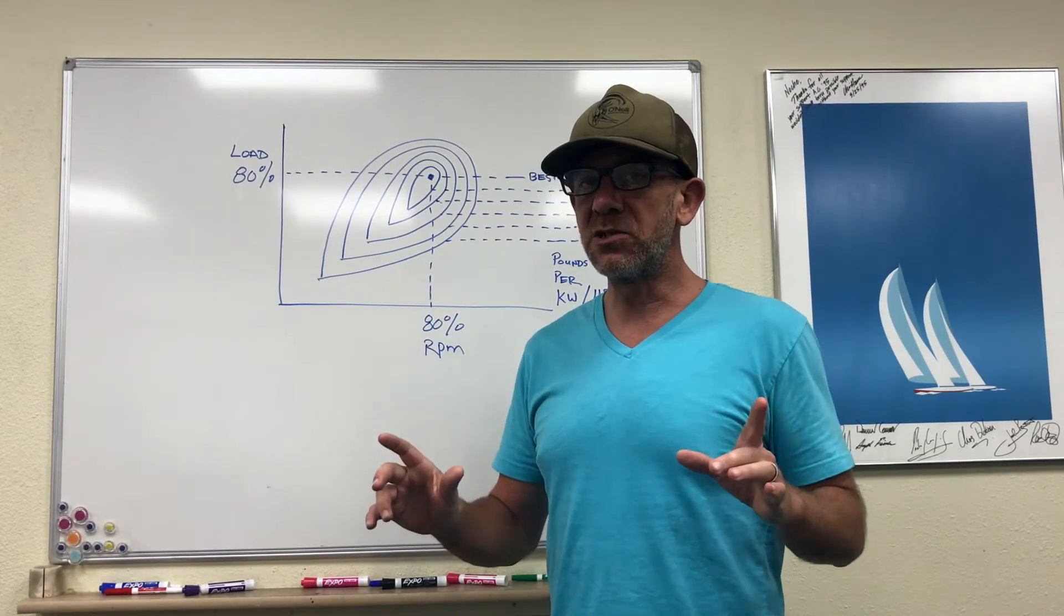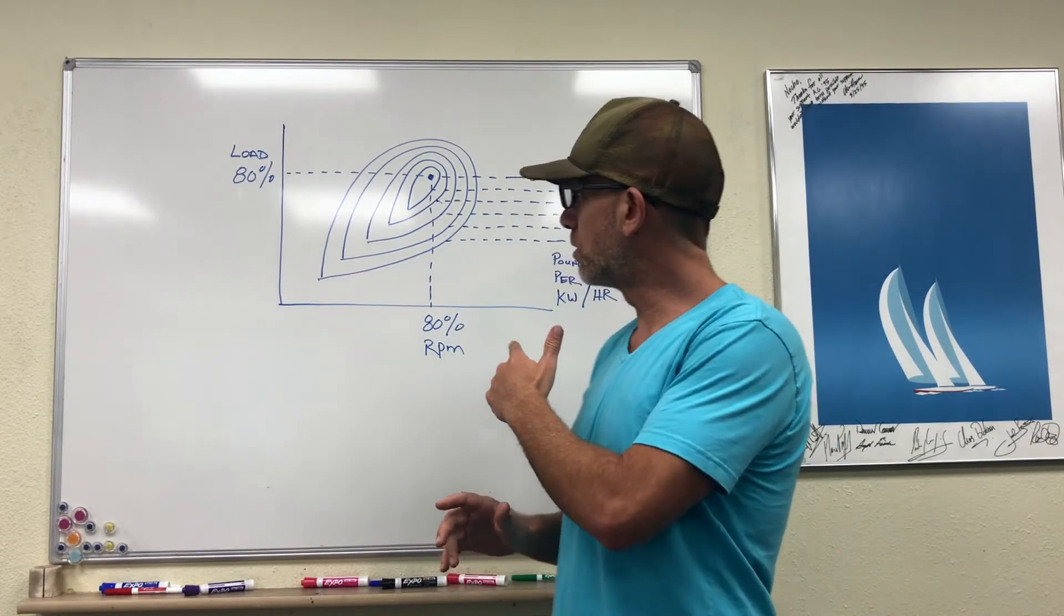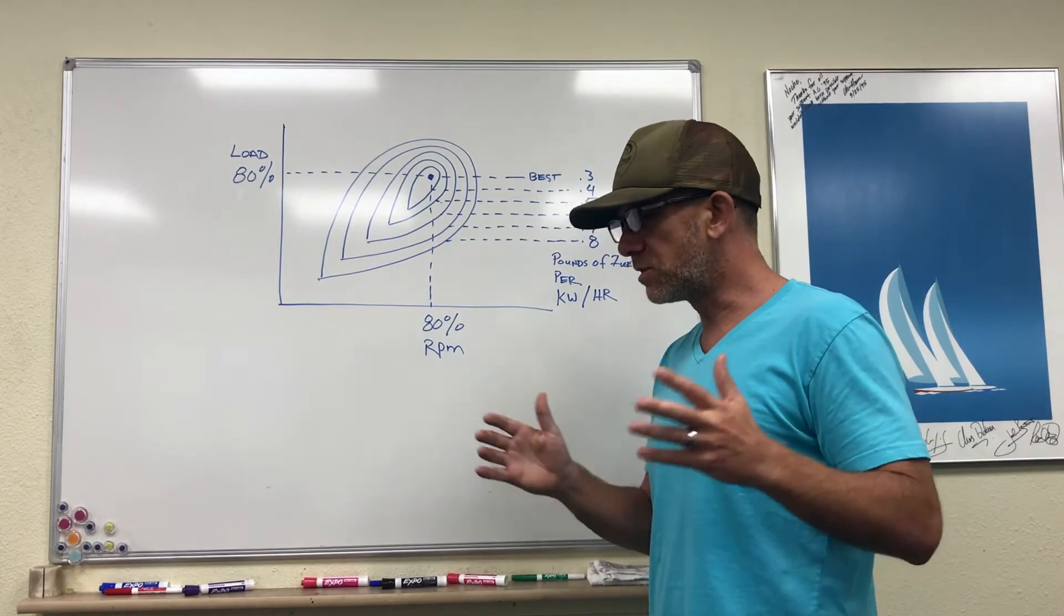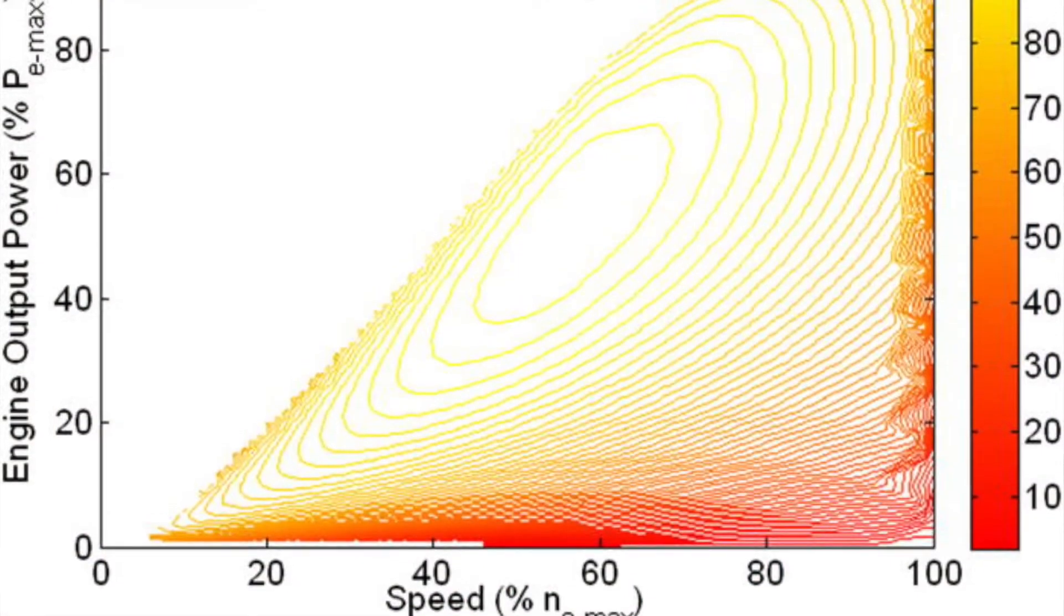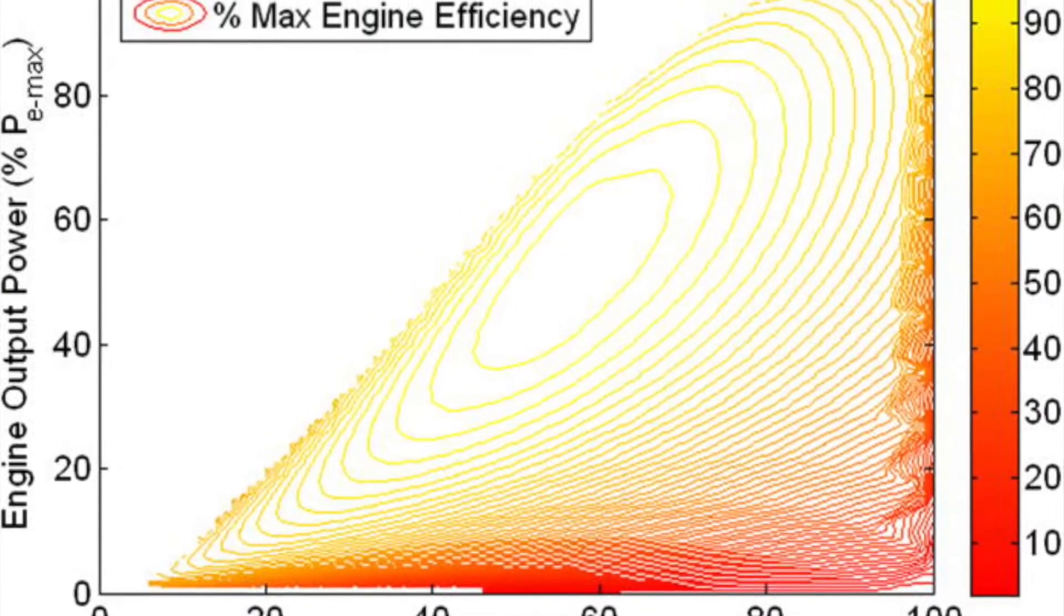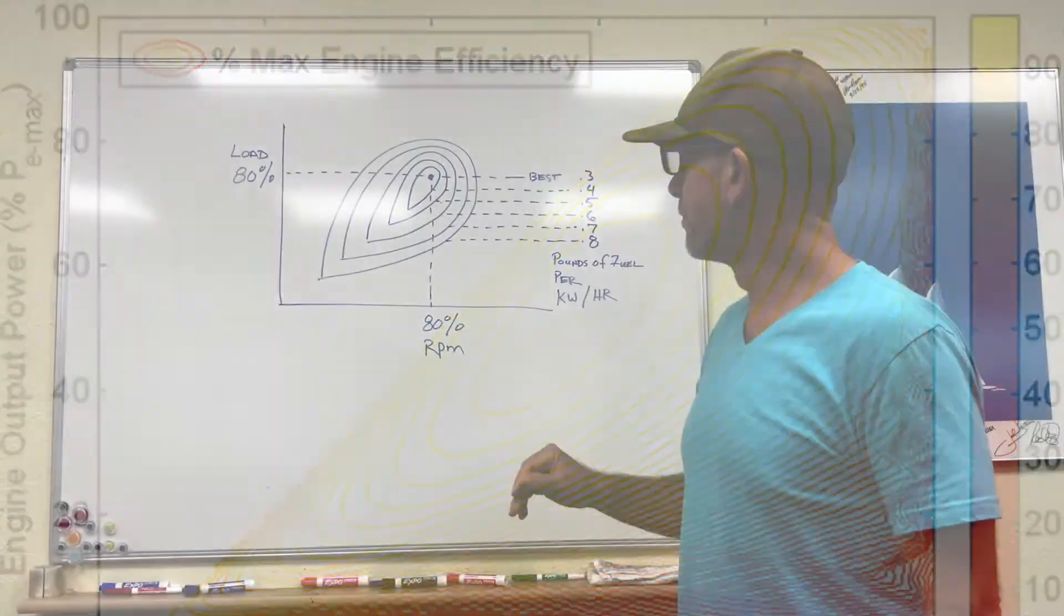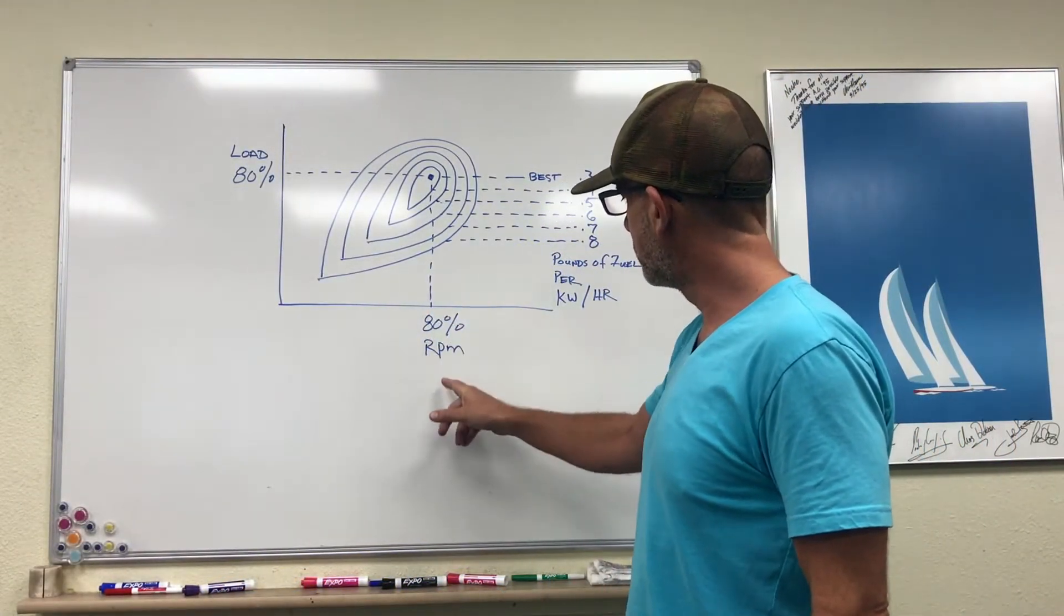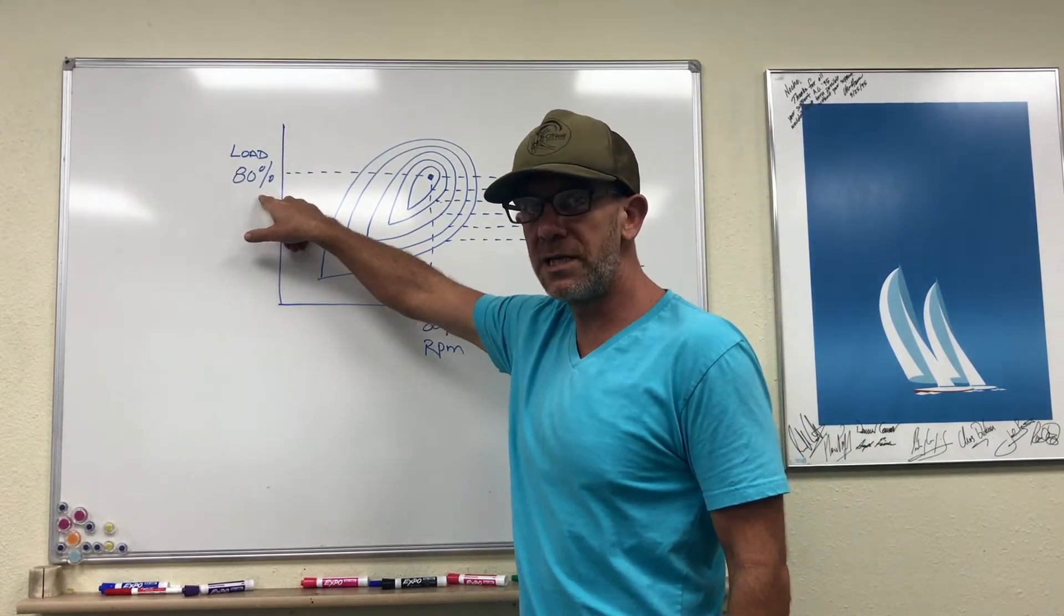So to determine the best efficiency, you need to look at a fuel map. What I've got on the board here is an example of a fuel map. Now all diesel engines have their own fuel map and they're going to vary from one to the next, but for the most part they're going to look approximately like this. What this shows is that when the diesel engine is running at roughly 80% of its rpm and it has approximately an 80% load...